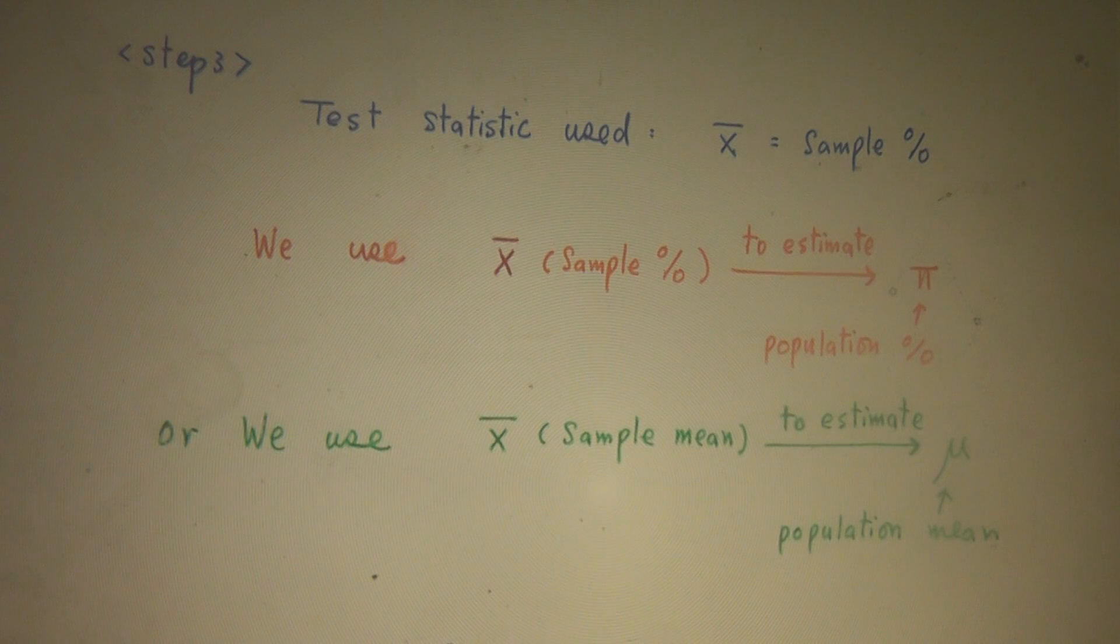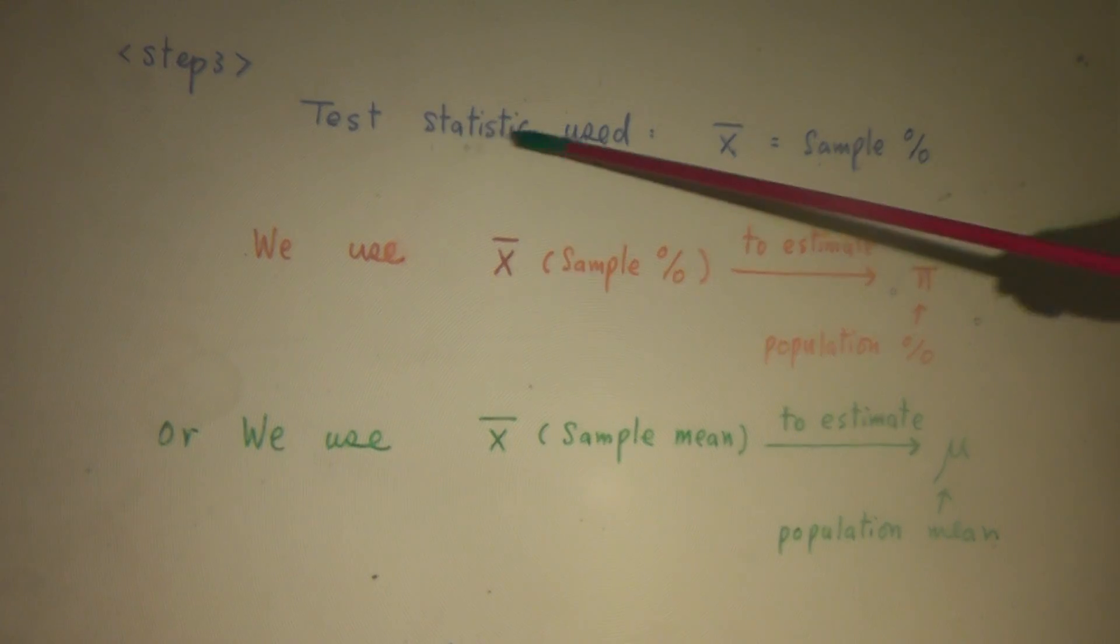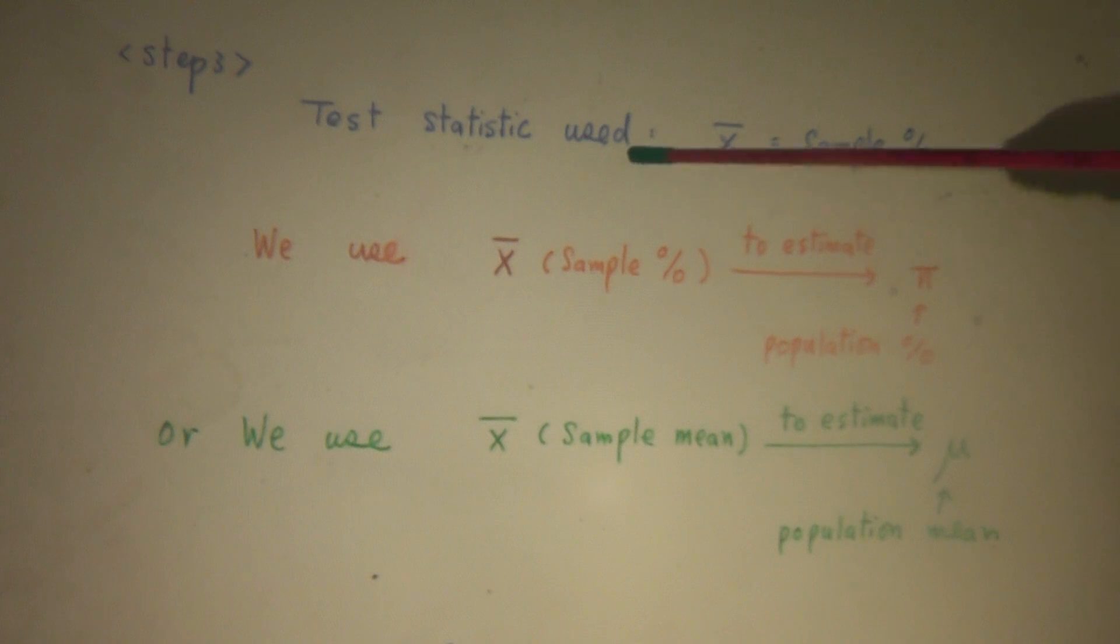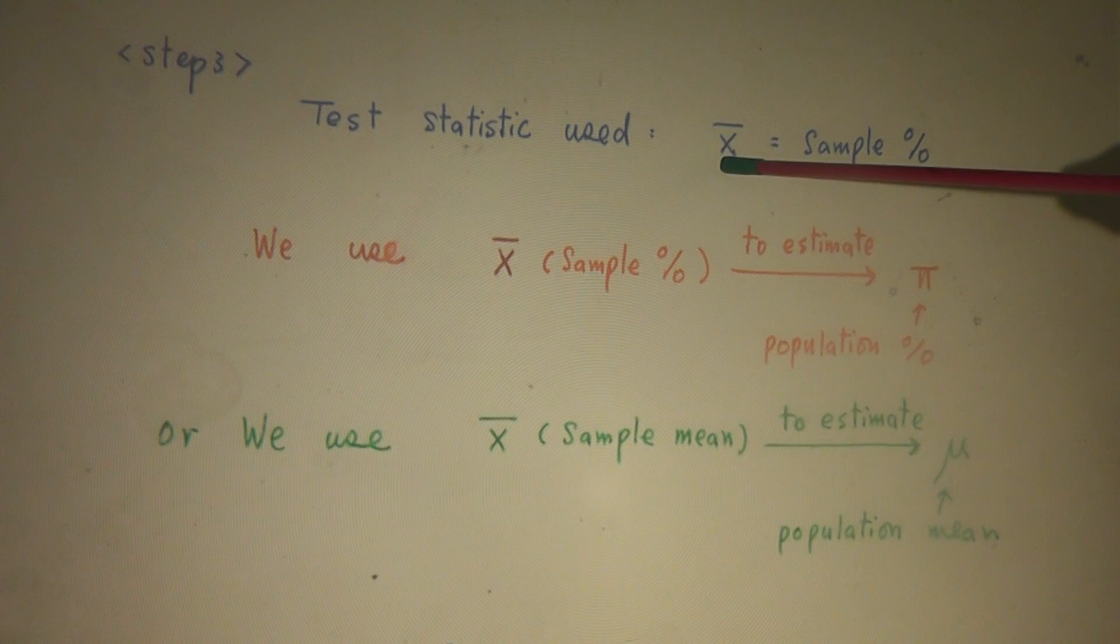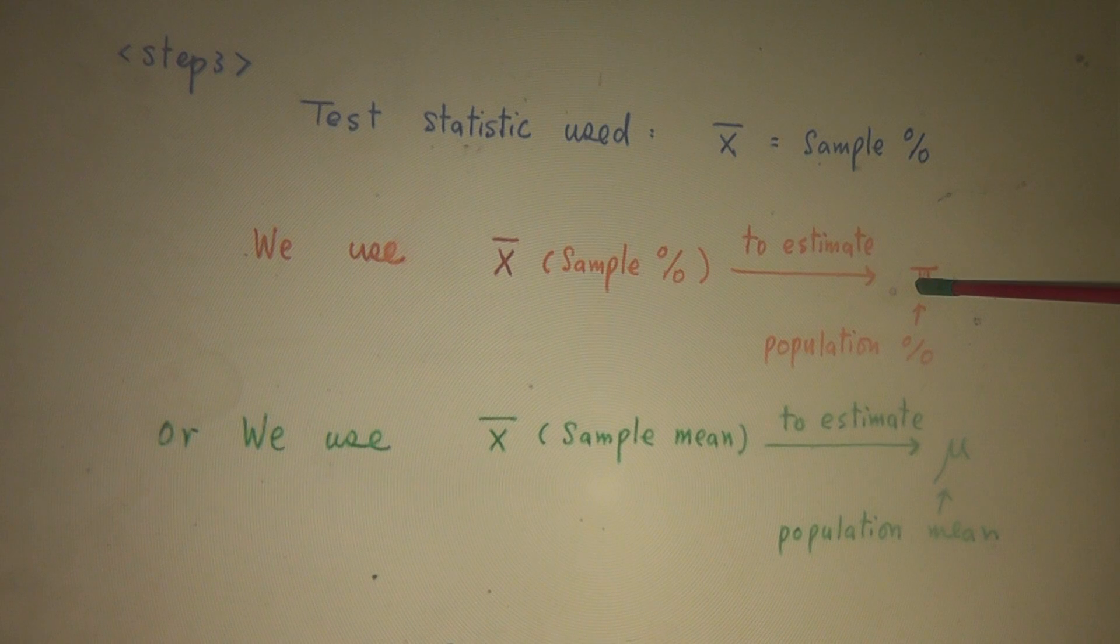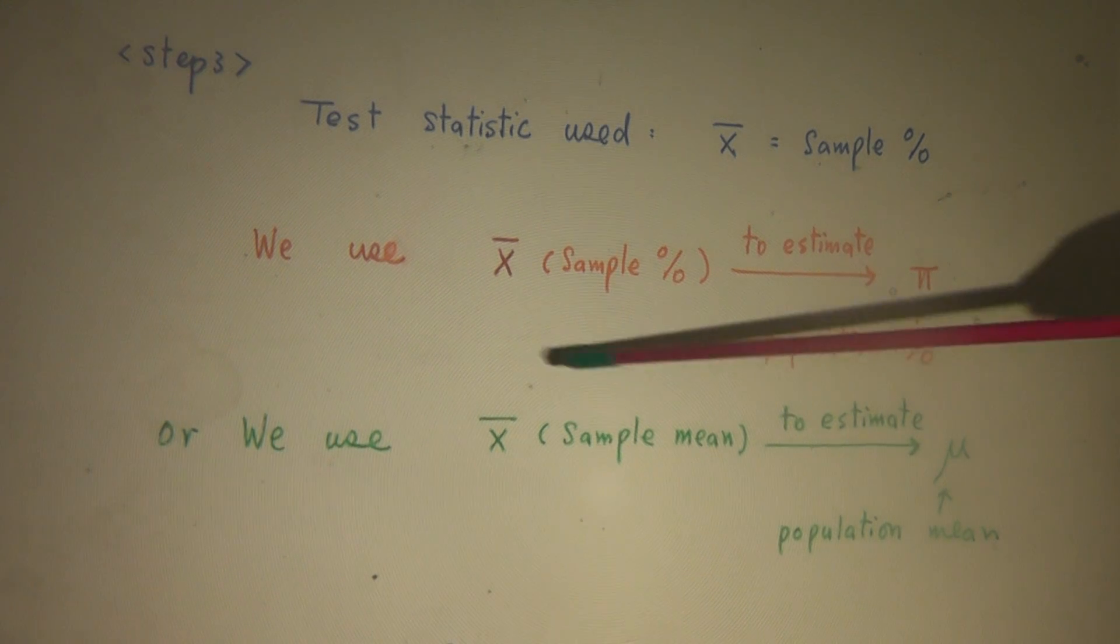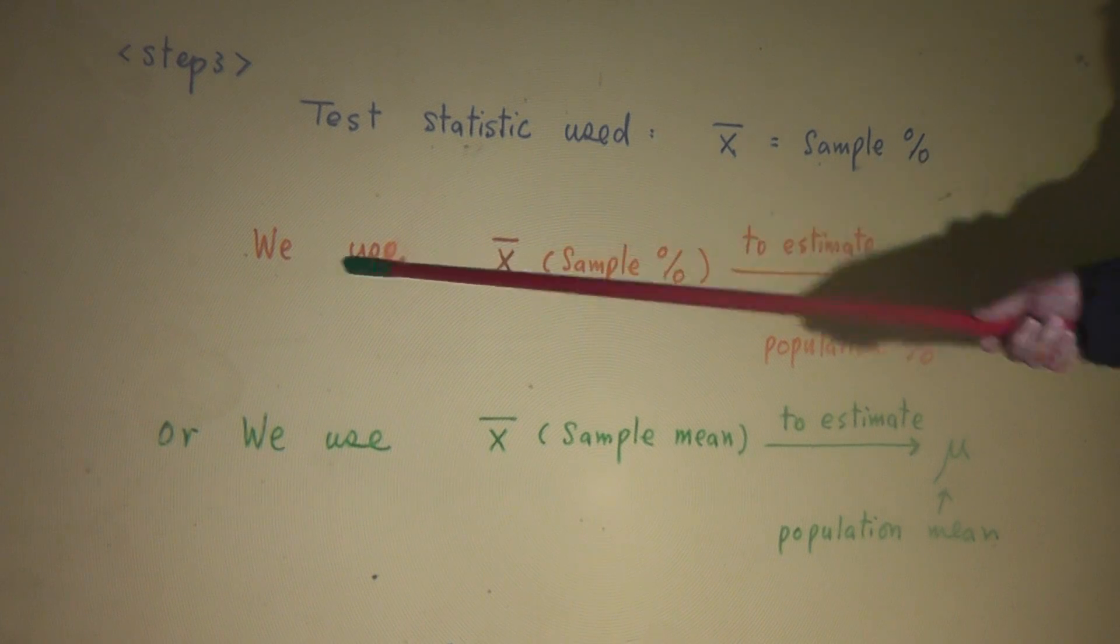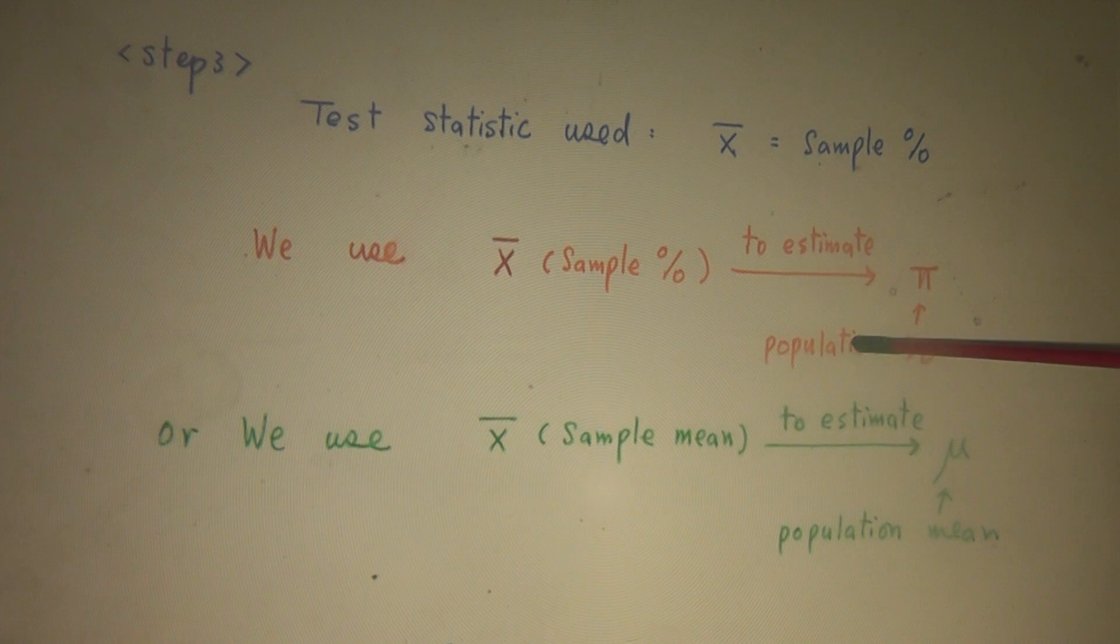Step three. Test statistic used. In this example we're going to use x-bar, which is sample percentage, to estimate pi, the population percentage. So in step three, we use sample percentage to estimate population percentage.